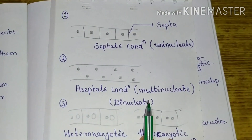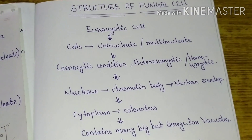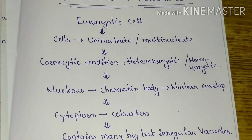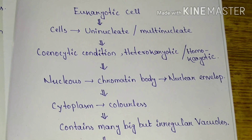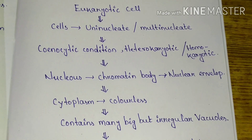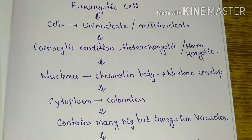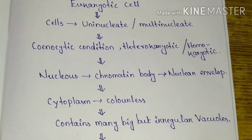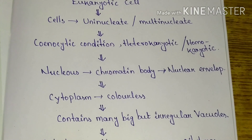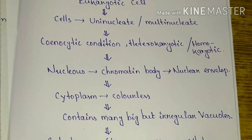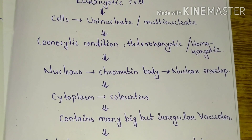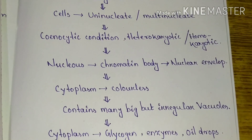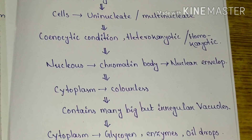Since fungi are eukaryotic cells, a well-developed nucleus is present. The nucleus contains a chromatin body which is surrounded by the nuclear envelope — this is the main characteristic of eukaryotic cells.